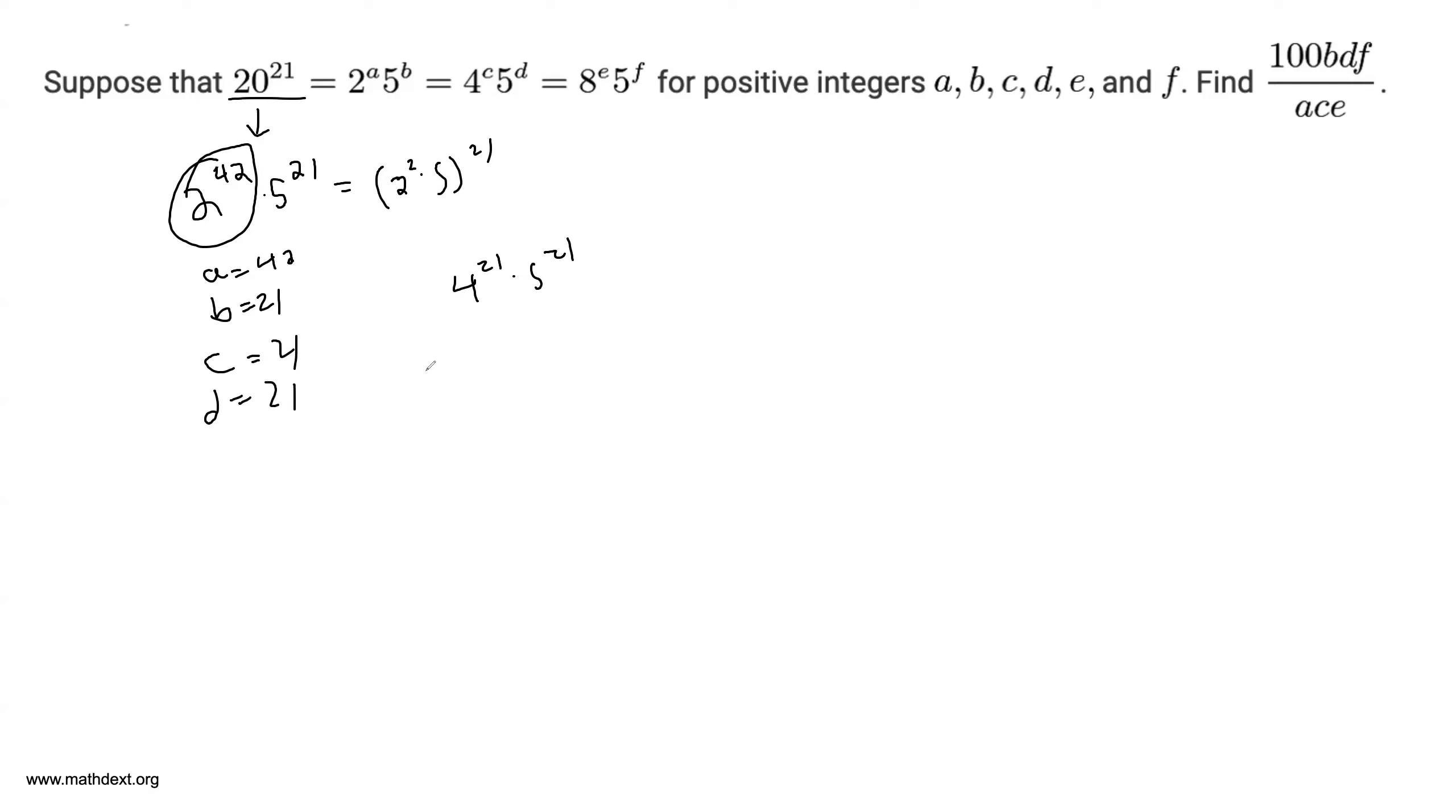Finally, 2 to the 42 is equal to 8 to the power of 14, so 20 to the 21 is 8 to the 14 times 5 to the 21, so e is equal to 14 and f is equal to 21.